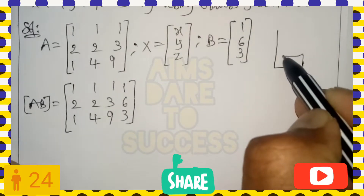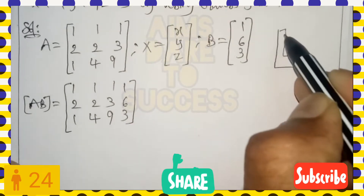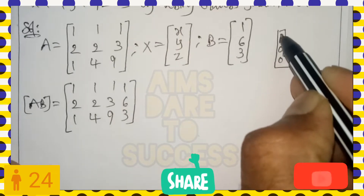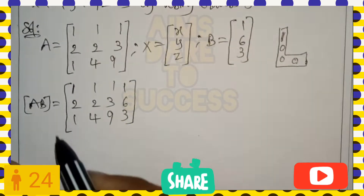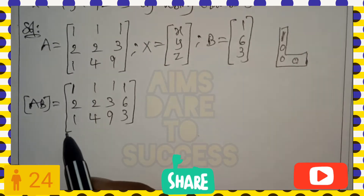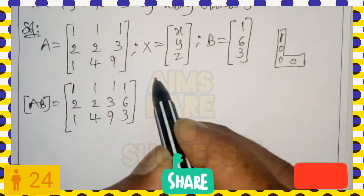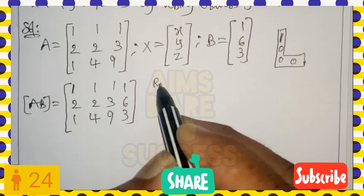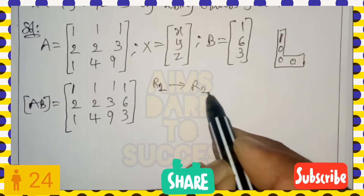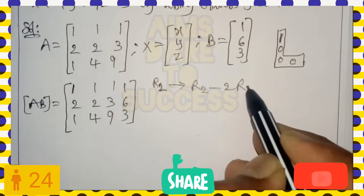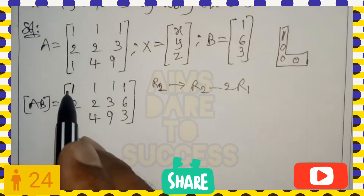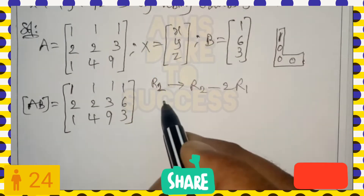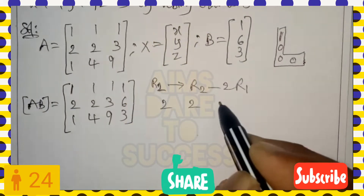Remember the logic: in an L-symbol pattern, we need ones on the diagonal and zeros below. We already have a 1 in the first row, first element. To get zero in the second row, first element, we apply the row operation R2 → R2 minus 2·R1.